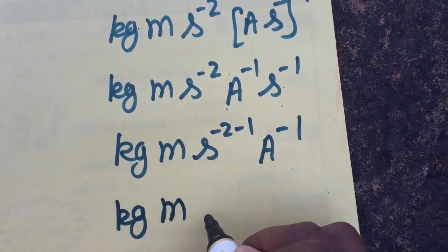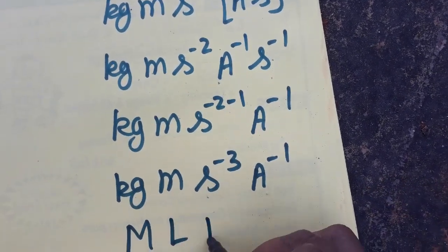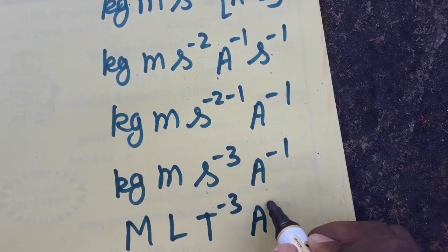So kg meter second minus 3 ampere inverse. So MLT minus 3 A minus 1.